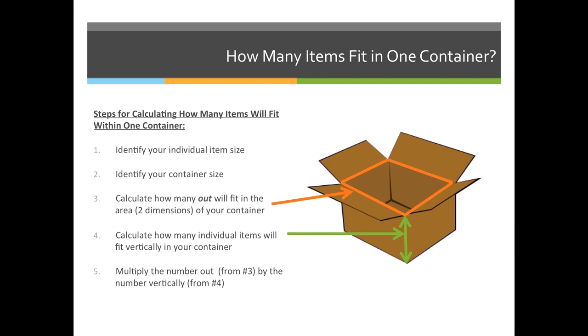Secondly, we're going to identify the size of our container. Maybe this container is 18 inches wide, 22 inches long, and 9 inches tall. Whatever those values happen to be, we need to know them so we can figure out how many books will fit into that limited space.